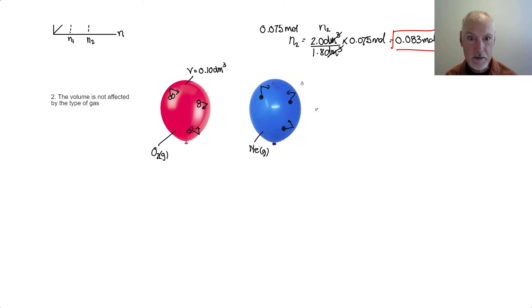Avogadro found out that the volume, since this balloon contains the same number of particles, would be the same. So the volume of the balloon was independent of the type of gas and only depended upon the number of particles of gas.